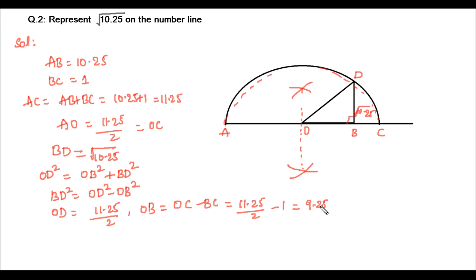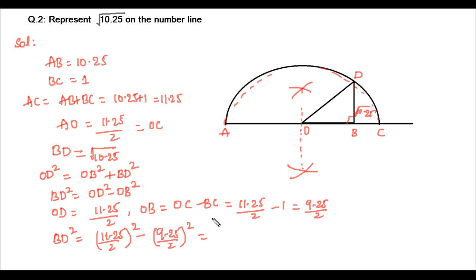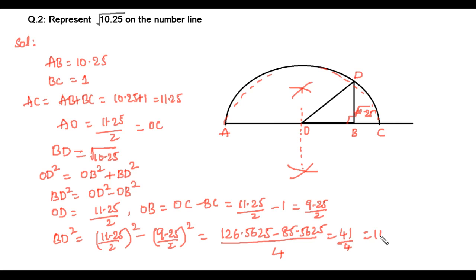Substituting these values: BD squared equals (11.25/2) squared minus (9.25/2) squared. Simplifying: this equals (126.5625 minus 85.5625) divided by 4, which equals 41 by 4, or 10.25. Therefore BD equals square root of 10.25.